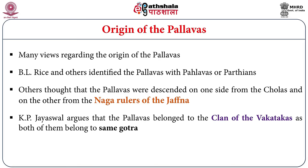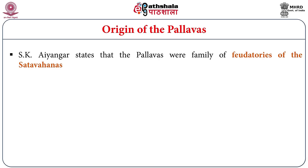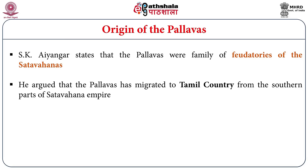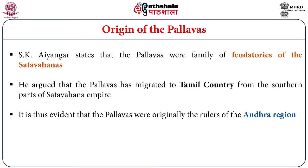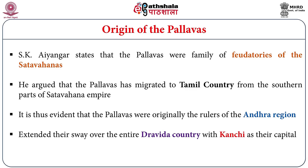S. K. Iyengar, another historian, states that the Pallavas were a family of feudatories of the Satavahanas. He argued that the Pallavas migrated to Tamil country from the southern parts of the Satavahana empire because the early Pallavas from 3rd century BC up to the rise of Simha Vishnu in the 6th century, their inscriptions were found only in the Andhra region. It is thus evident that the Pallavas were the rulers of Andhra region and later extended their sway over Tonda Mandalam, making Kanchi as their capital, becoming prominent as Pallavas of Kanchi.